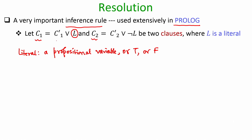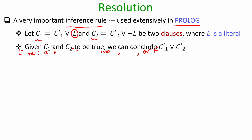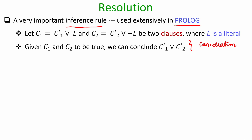We have two clauses C1 and C2. In C1 we have some literal L, and the same literal is available in negation form in C2. The remaining portion of C1 I am denoting as C1 prime, and the remaining portion of C2 as C2 prime. The resolution rule says that if C1 and C2 are true, then we can conclude C1 prime disjunction C2 prime. In some sense, resolution is equivalent to a cancellation rule.